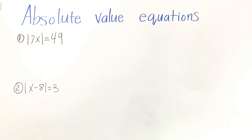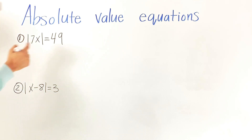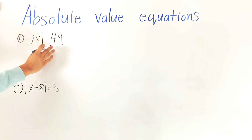When we're talking about absolute value, we're just talking about how many spaces there are to get to zero. So if you're at negative seven, how many spaces do you need to go to get to zero? That's going to be seven. And if you have seven, how many spaces from zero to seven? That's also going to be seven.